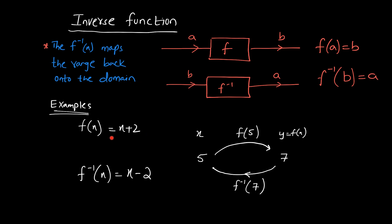For example, if I have a function f(x) = x + 2, when I insert 5 into this function I get 7. The inverse function is one in which when 7 is inserted, it gives you back the value 5. You need to come up with that function, and that particular function is the inverse function of f(x).